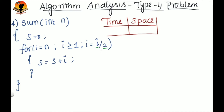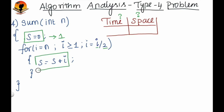Now look at this question — here this variable i is divided by 2. So what is the time and space complexity for this problem? As we learned in lecture 2, every statement in your code takes one unit of time. This declaration statement takes one unit of time because it will be executed only once, and then this statement is present inside the loop, so we have to find out how many times this statement will be executed.